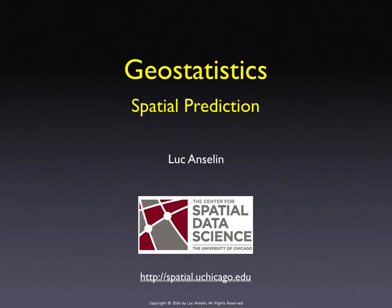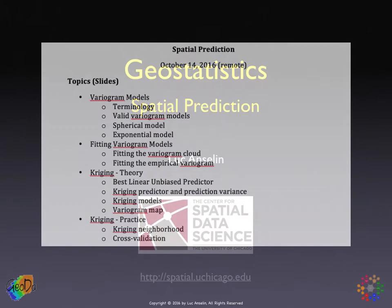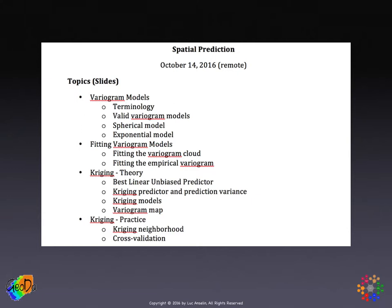Today, we'll continue our treatment of geostatistics and focus on spatial prediction. We'll cover four different topics, which really divide into two parts. The first part, we focus on theoretical models to specify the change in a variogram with distance, and these are called variogram models. We'll focus in particular on the spherical model and the exponential model, which are the most used in practice.